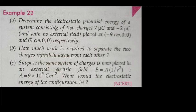The question is: determine the electrostatic potential energy of a system consisting of two charges 7 micro coulombs and minus 2 micro coulombs, with no external field, placed at (minus 9 cm, 0, 0) and (plus 9 cm, 0, 0) respectively.